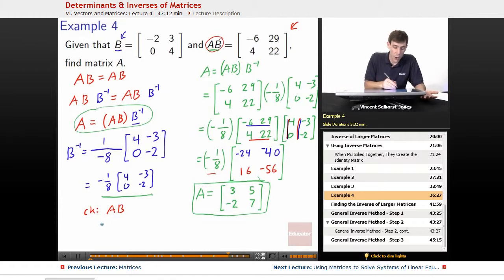Well, we know what the A we just figured out is. That's 3, 5, negative 2, 7, and the B we started off with that we were given is negative 2, 3, 0, 4. So we work this out.